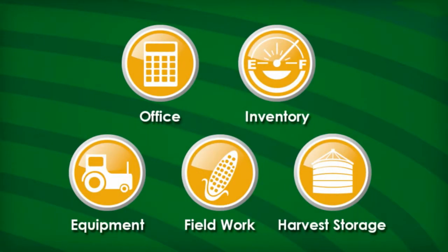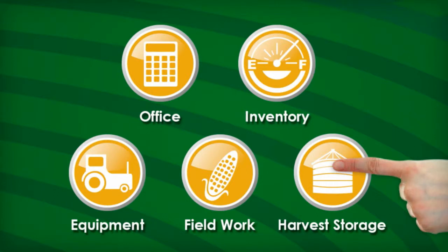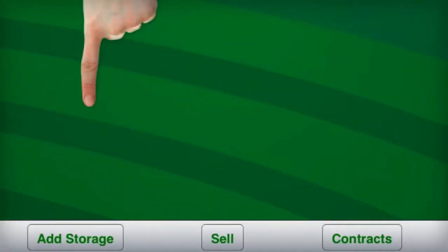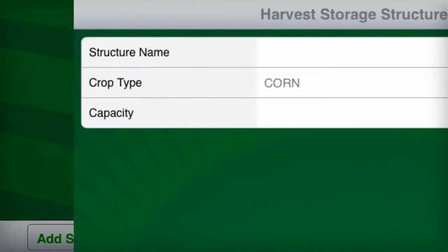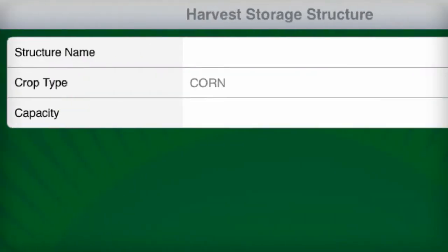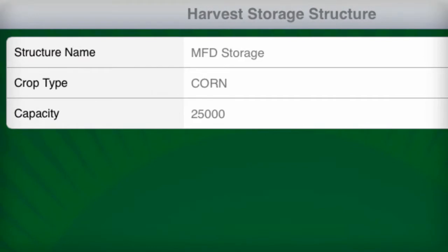From the home screen, go to harvest storage and then select add storage at the bottom of the screen. Here you can enter a name of your choosing, select the crop type, and enter the capacity.